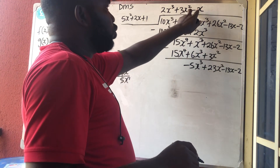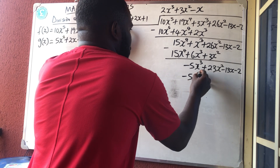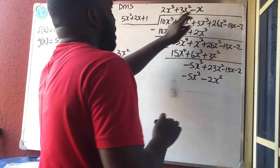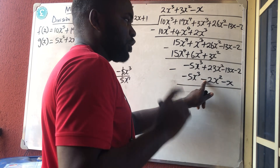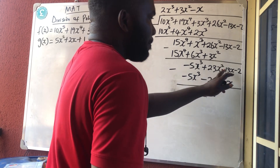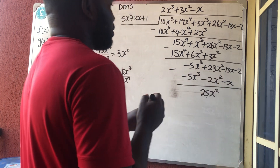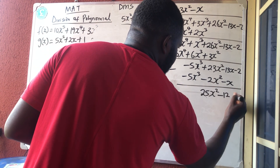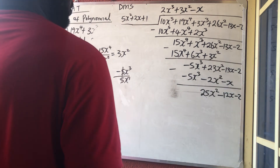Multiplication: −x times the divisor. −x times 5x² gives −5x³. −x times 2x gives −2x². −x times 1 gives −x. Now subtract: minus times minus is plus, so 23 + 2 = 25x². Minus times minus is plus, so −13 + 1 = −12x. Bring down −2.